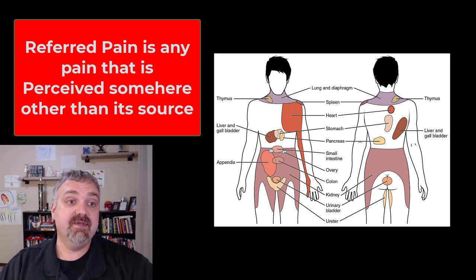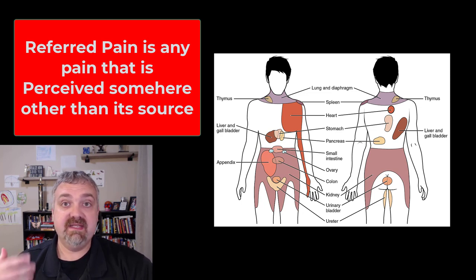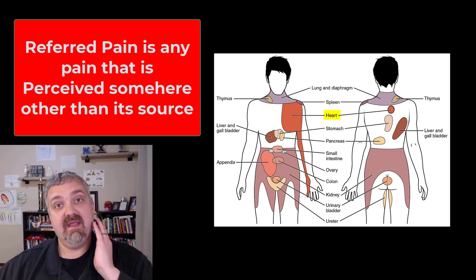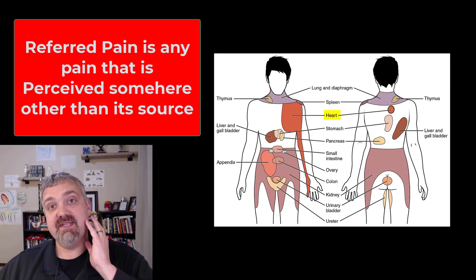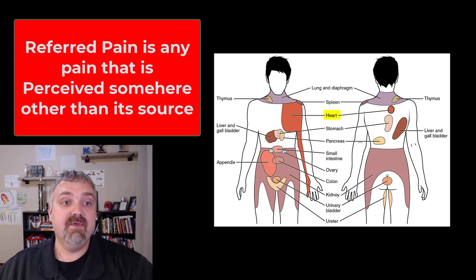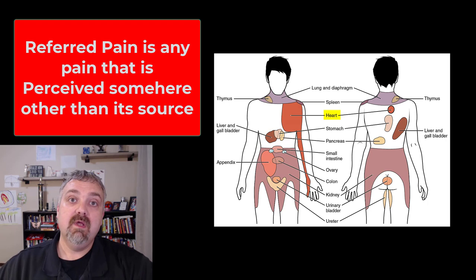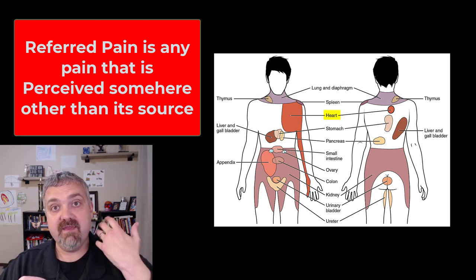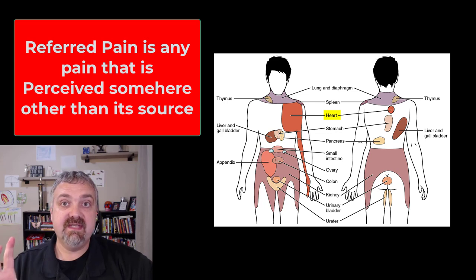Here we see some examples of referred pain, again just caused by this confusion in your brain. The textbook example is going to be heart attacks. You see the heart there — if someone's having a heart attack they may be feeling pain or some other sensation in the jaw, the neck, the chest, or down the left arm. Those are typical heart attack pain symptoms. So that's referred pain — there's nothing wrong with the arm, nothing wrong with the jaw. That's just where the sensation is being sensed.